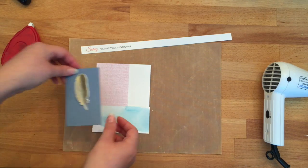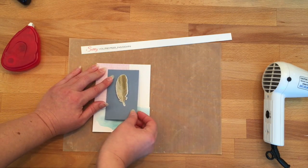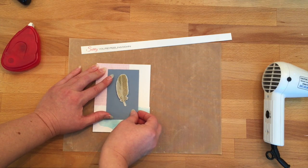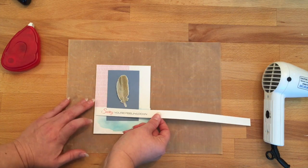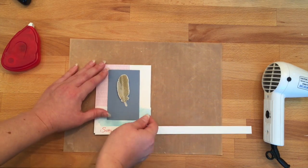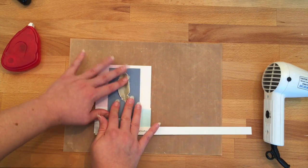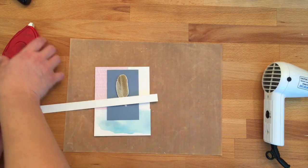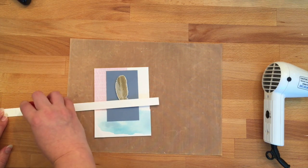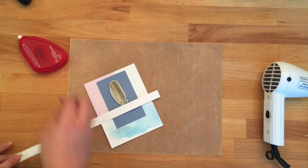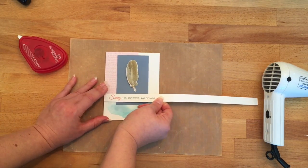Now before you stick it all the way down onto your card front and adhere it really well, I recommend that you take the greeting, as I've done here, and lay the greeting in place to see if you like where everything is. I realized I needed to move my card stock up about a quarter of an inch or so. So that's what I did, and now I'm going to put the adhesive onto the greeting and glue it down across the front of the card.